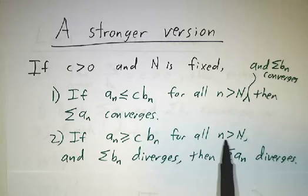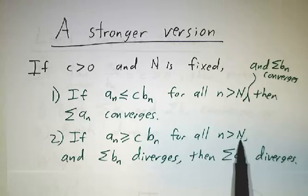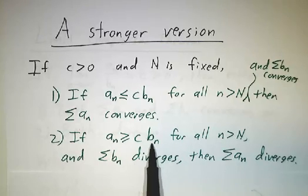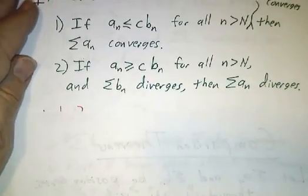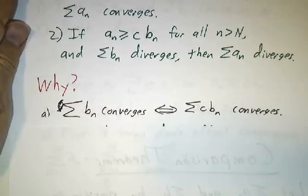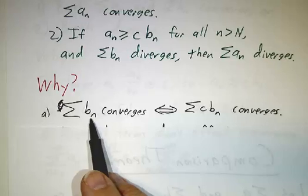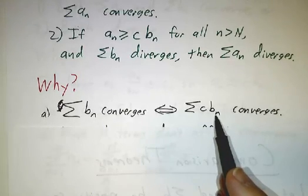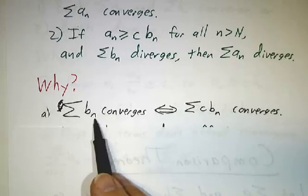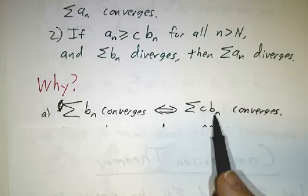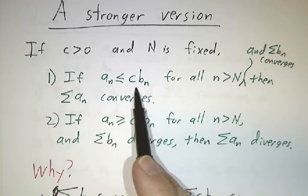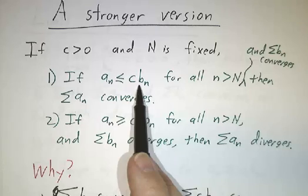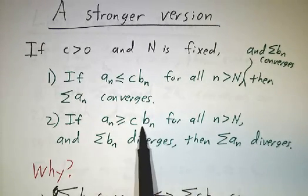Similarly, if after a while — for all little n bigger than big N — the a_n's are bigger than c times b_n, and the sum of b_n's diverges, then the sum of a_n's diverges. The factor of c really doesn't matter, because if the sum of b_n's converges then the sum of c times b_n's converges, and if the sum of b_n's diverges then the sum of c times b_n's diverges. So whether you use b_n or c times b_n doesn't matter — if one converges the other converges, and a_n is less than something that converges, so we win. Or a_n is bigger than something that diverges, so we lose.